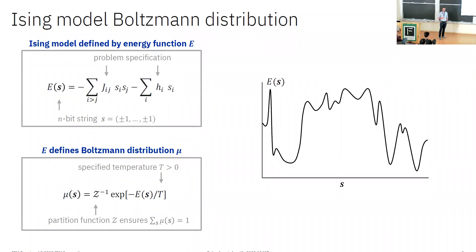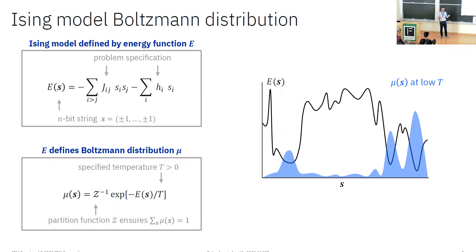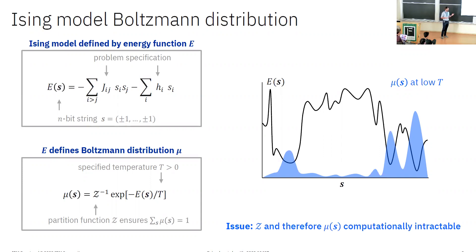What does this Boltzmann distribution look like? In the low temperature limit, it becomes very sharply peaked over the global minimum of this energy function. In the opposite high temperature limit, it instead approaches the uniform distribution over all n-bit strings. The regime we'll be most interested in is this hard intermediate regime, where the Boltzmann distribution has substantial weight over a number of different low-energy regions within this landscape that could be far from one another in Hamming distance. These equations are deceptively simple, and in fact this Boltzmann distribution can be quite hard to work with computationally. The partition function Z involves a sum over every possible bit string, of which there are exponentially many, so in general we can't evaluate these Boltzmann probabilities — the actual numbers.